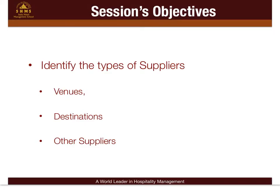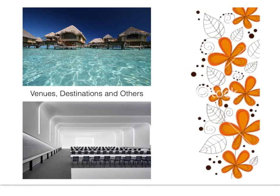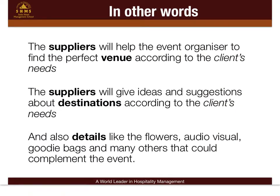There are three main types of suppliers: venues, destinations, and others. The suppliers will help the event organizer to find the perfect venue according to the client's needs. They will also give ideas and suggestions about destinations, and handle details like flowers, audio-visual, goodie bags, and many others that could complement the event.